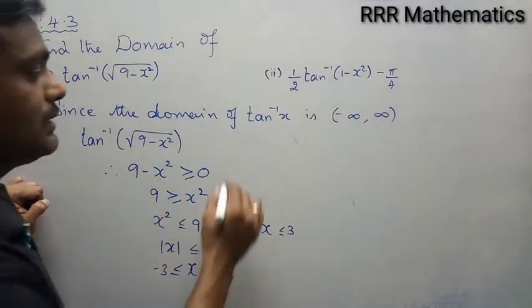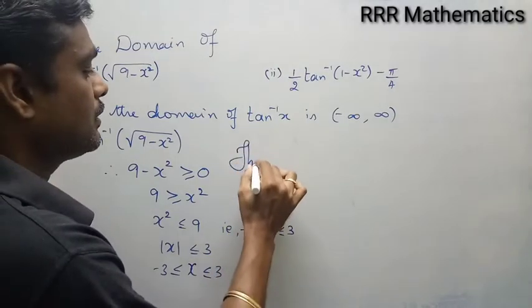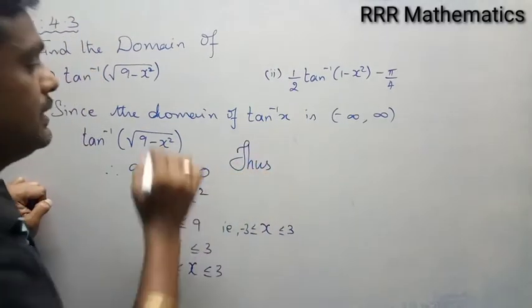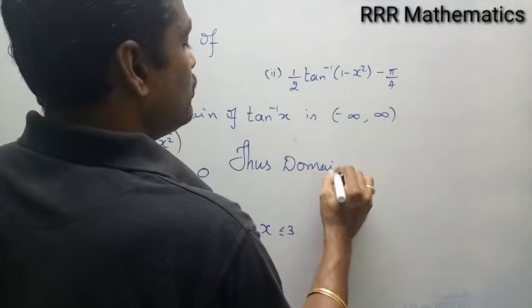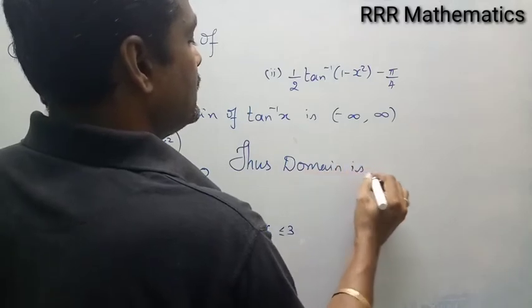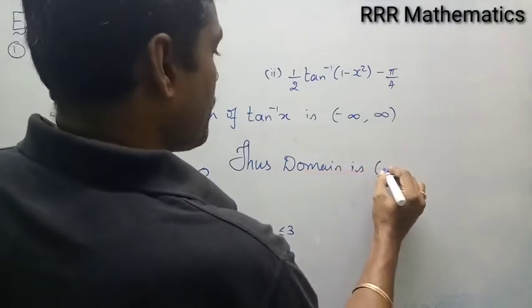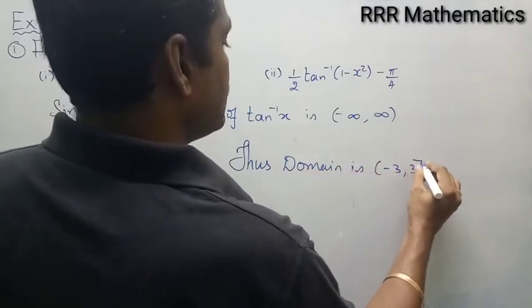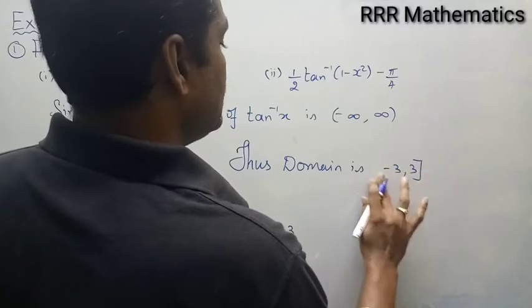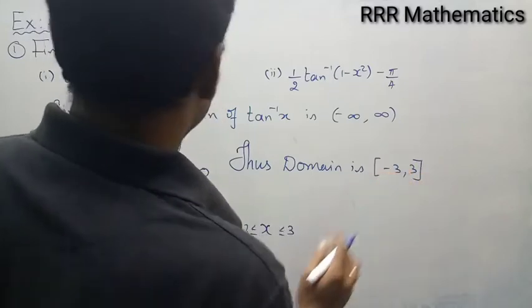So in this case the domain is the closed interval minus 3 to plus 3. Got it?